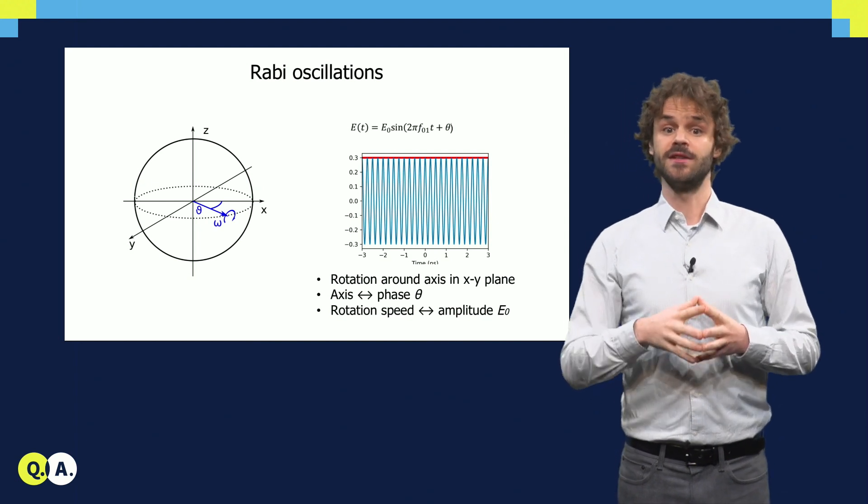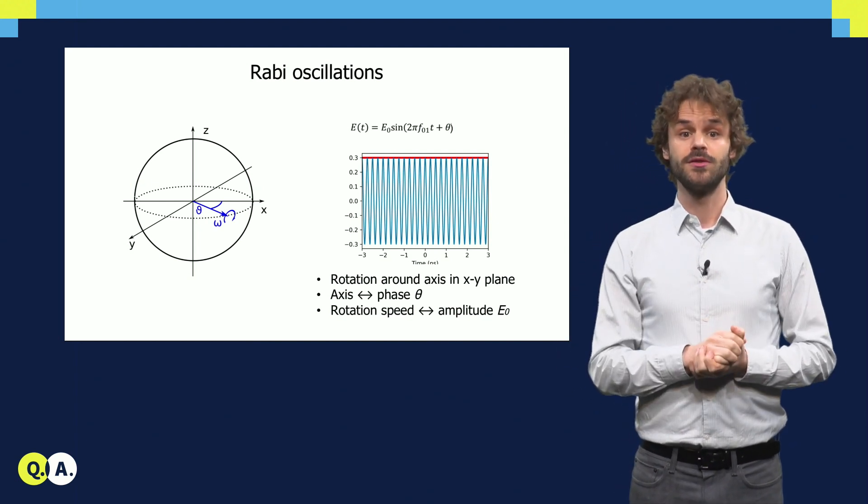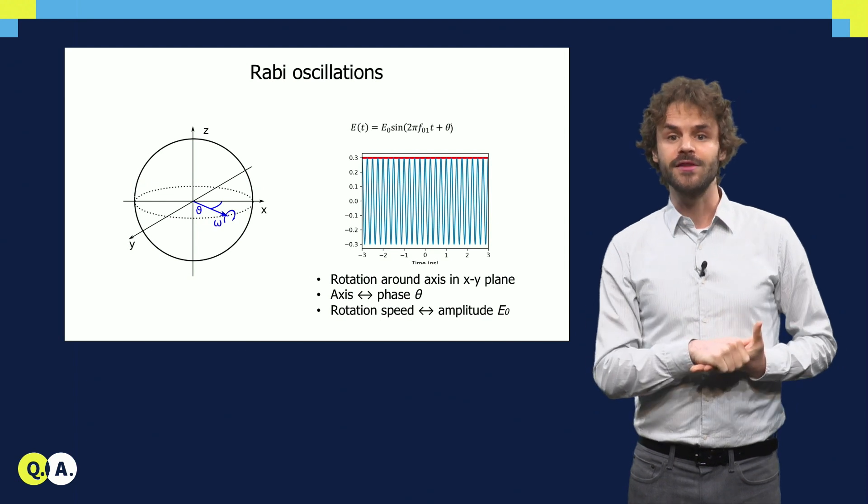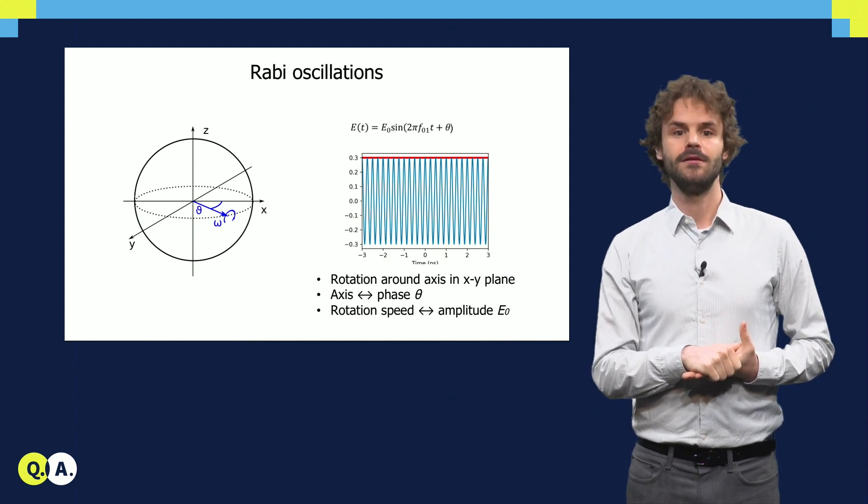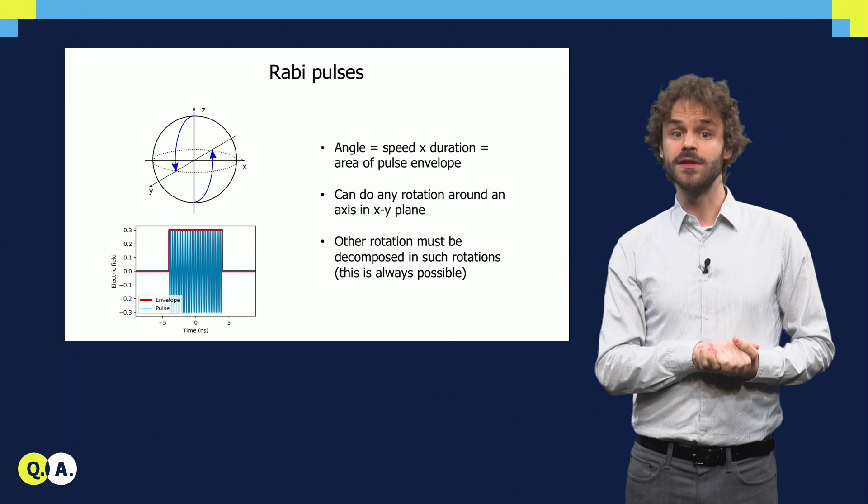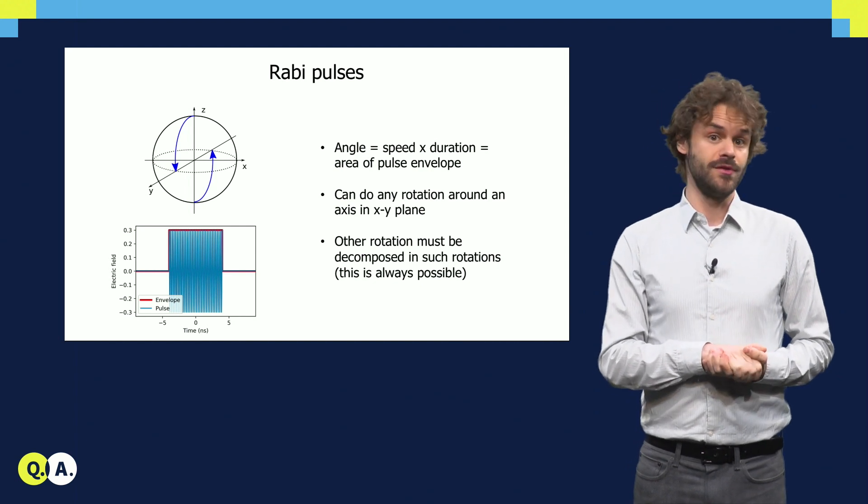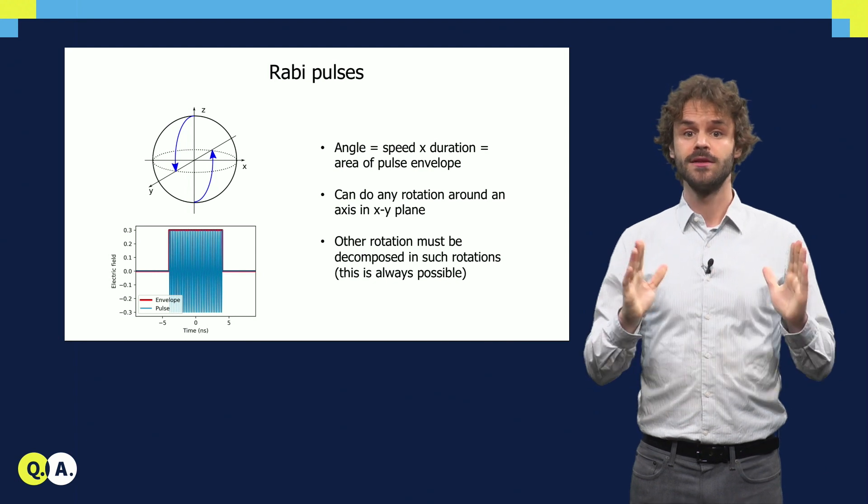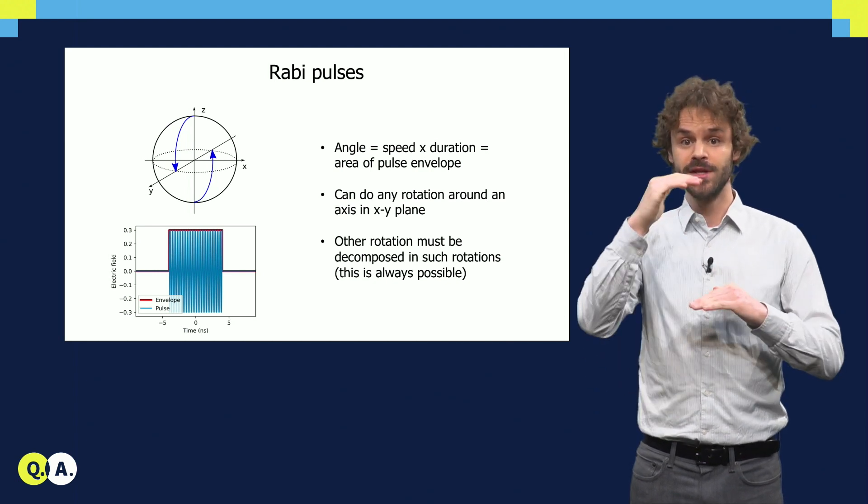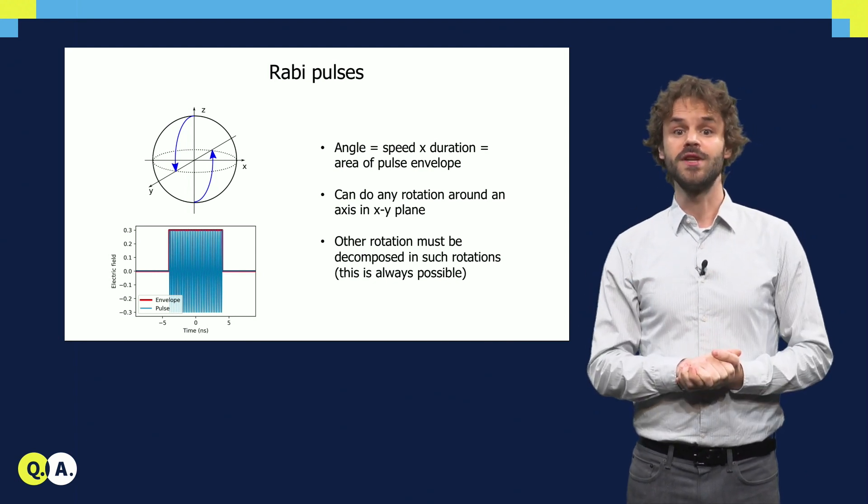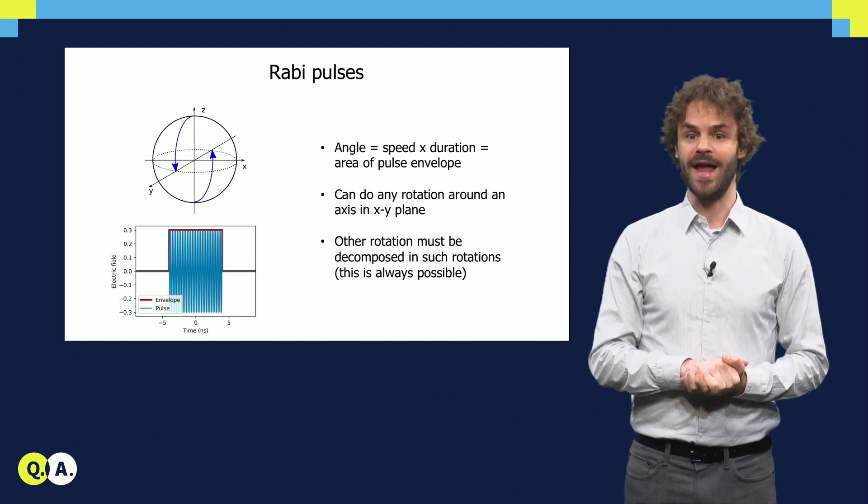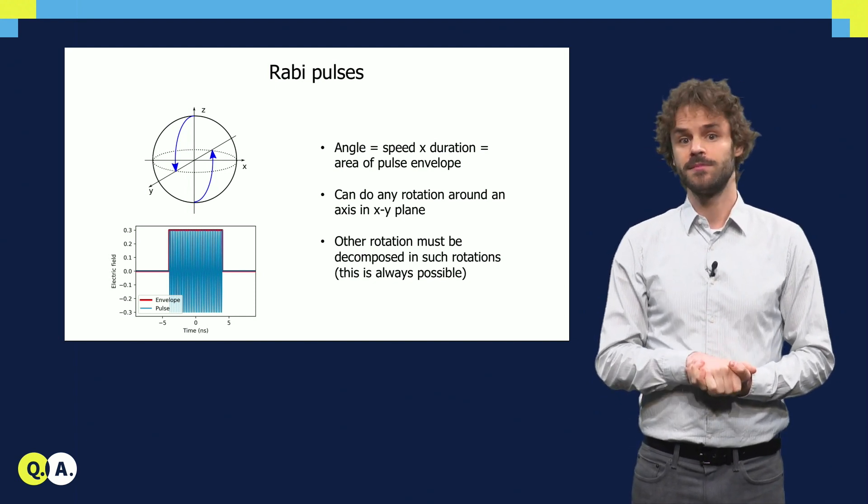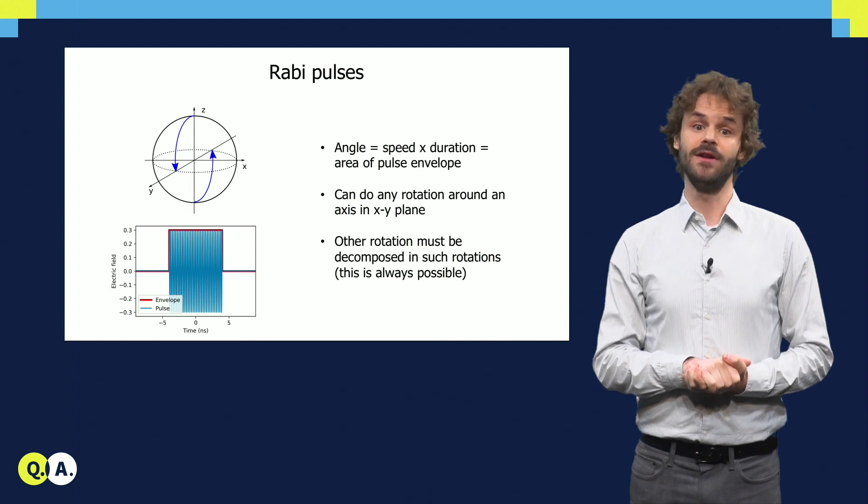On the other hand, the speed of the rotation is proportional to the amplitude of the electric field. In order to perform a desired gate, for instance, a rotation by 90 degrees around the x-axis, we thus need to apply a short pulse with the correct phase, amplitude and length. The rotation angle is determined by the product of length and amplitude, that is, by the area under the pulse envelope.